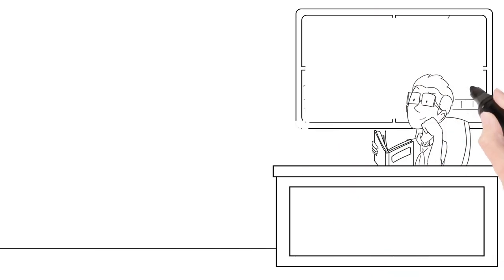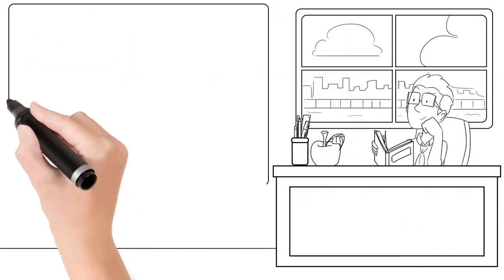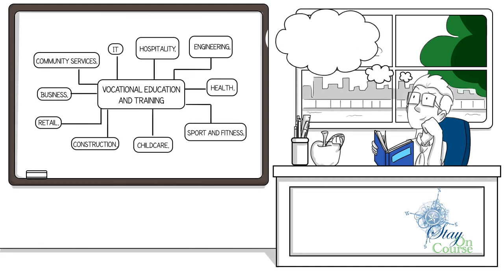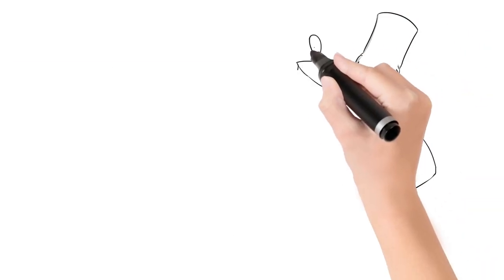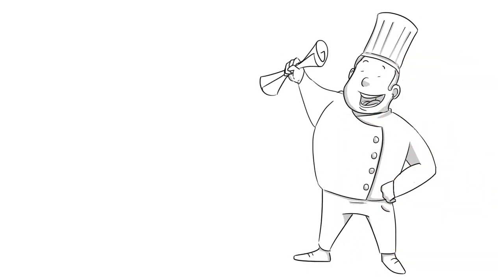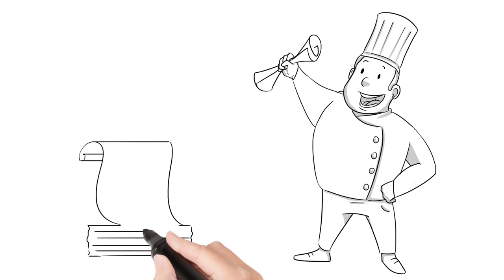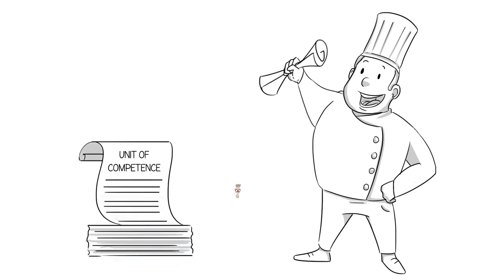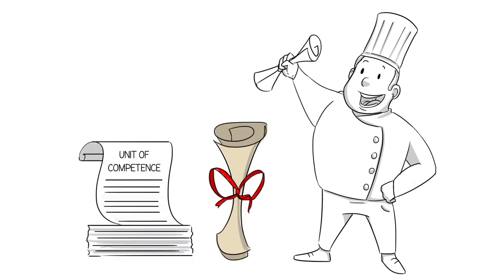Good training and assessing starts with a trainer who takes the time to unpack the content found in a unit of competence. In Australia, units of competence describe a specific work activity within a vocational area. They are the benchmarks for the VET sector and the building blocks to qualifications.